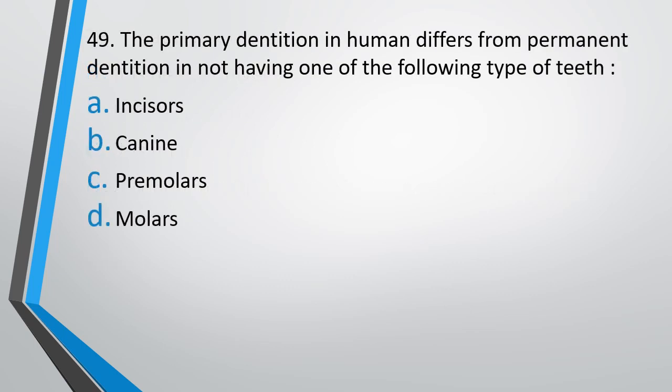Question number 49. The primary dentition in humans differs from permanent dentition in not having one of the following types of teeth: incisors, canines, premolars, or molars? One of these four types is not present in primary dentition or milk teeth. The correct answer is option C — premolars are not there in milk teeth; they come directly as permanent teeth. The dental formula for milk teeth in humans is 2102.